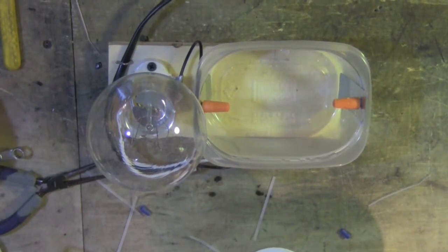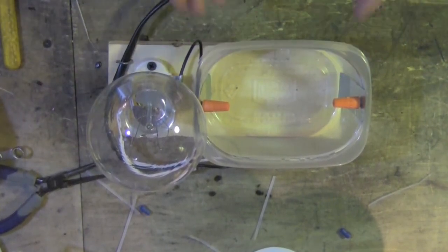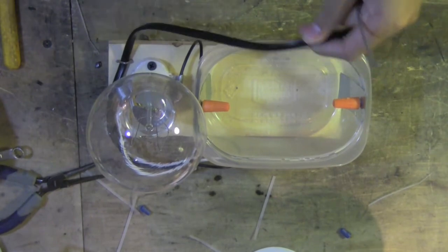What I have here is a conductivity apparatus. Basically it's a light bulb with two electrodes in a tank full of water and an electrical cord to be plugged into the wall.